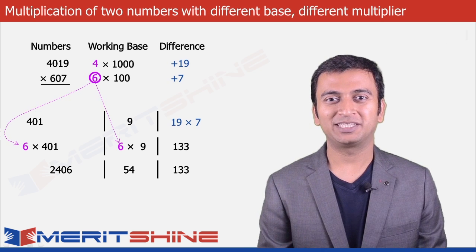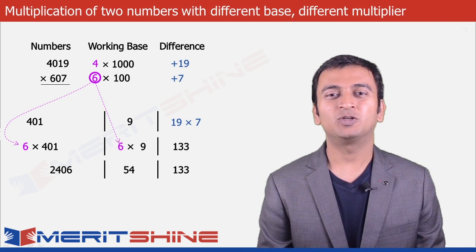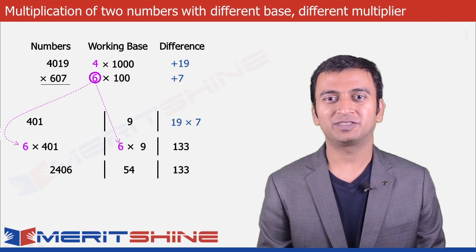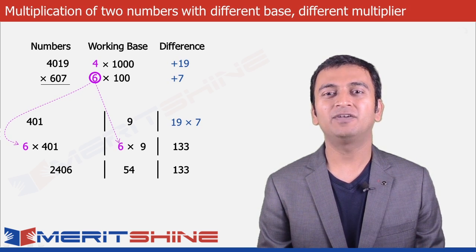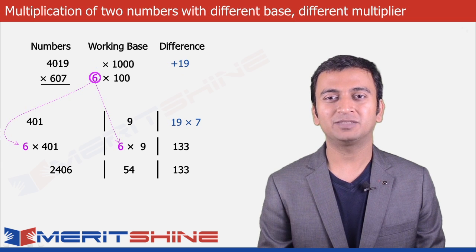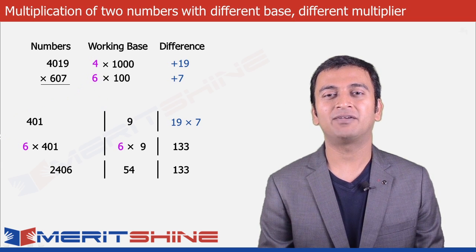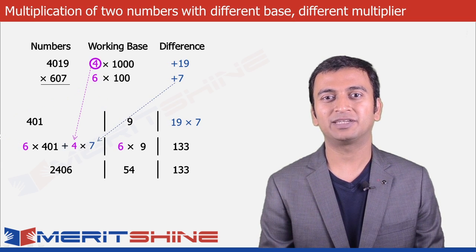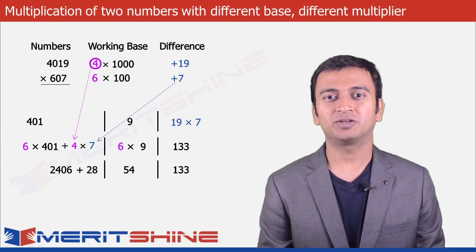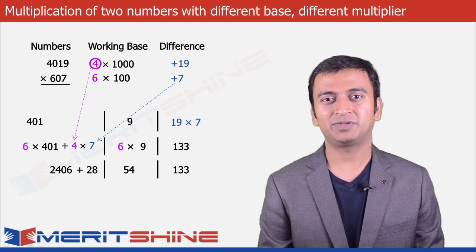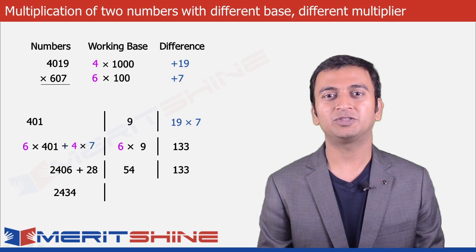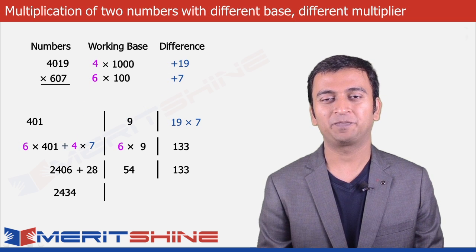Now we will make one more adjustment to 2406 — we will add the product of the first multiplier and second difference, which in our case is 4 into 7, giving 28. So 2406 plus 28 will give us 2434.